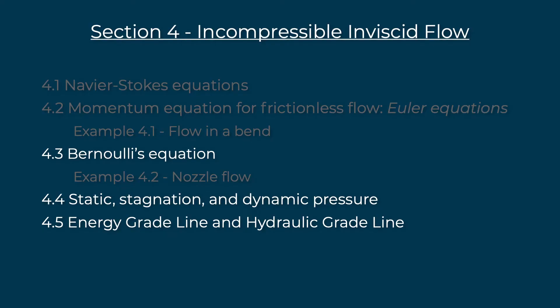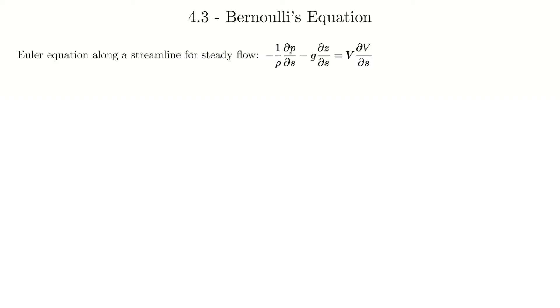Here's the breakdown of section four with what will be covered in this video shown in white text. So it's Bernoulli's equation, then looking at three different types of pressure: static, stagnation, and dynamic. We'll finish with a visualization using the energy grade line and hydraulic grade line. Alongside this video will be example 4.2, in another video, where I'll be using Bernoulli's equation to solve for a flow through a nozzle.